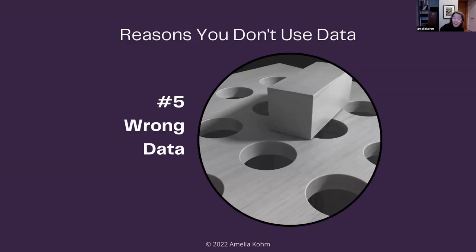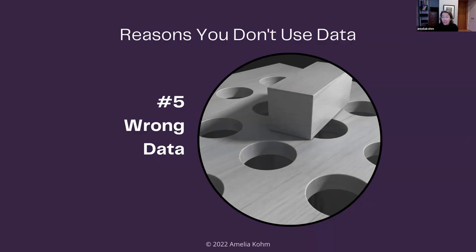Number five is wrong data. Many nonprofits have data on participants and financials, but often lack data to show impact. A tutoring program may not have access to students' grades and scores because it's hard to get that data out of school systems. An employment program may not have data on former participants' wages. That's hard data to collect — you have to track down past participants and survey them. Feeling like they don't have the data they want to show, sometimes organizations give up.